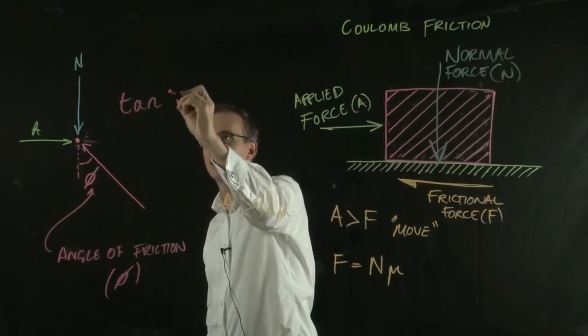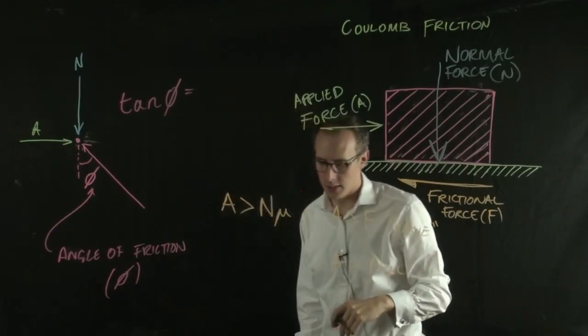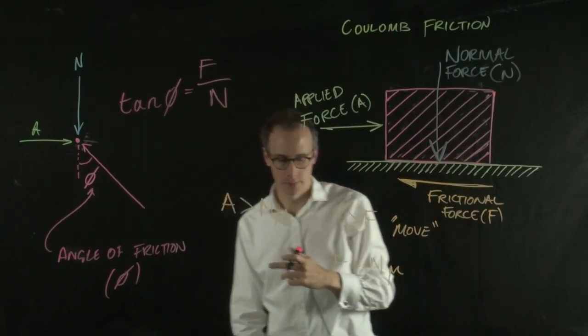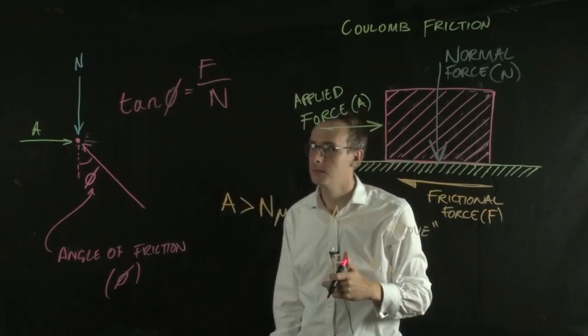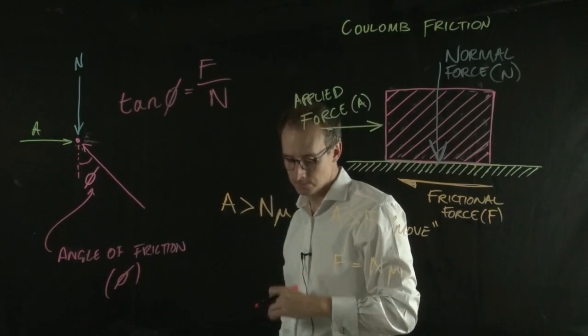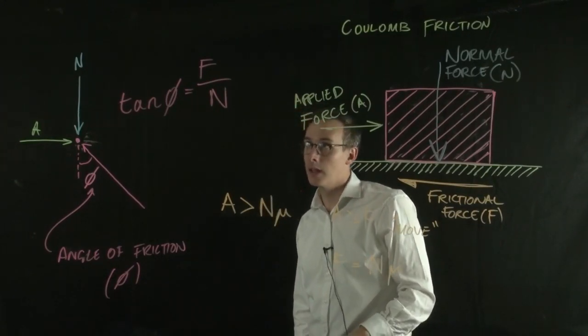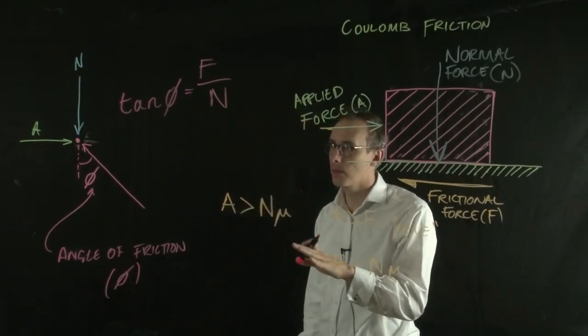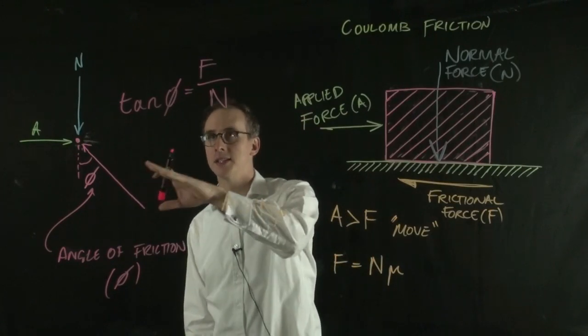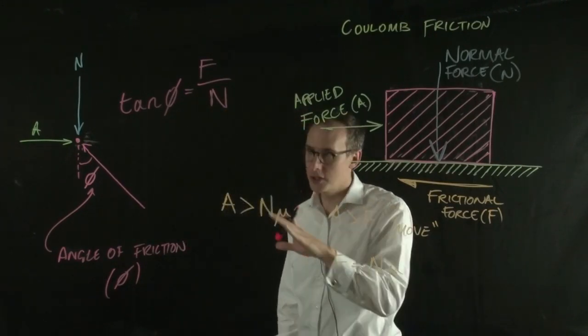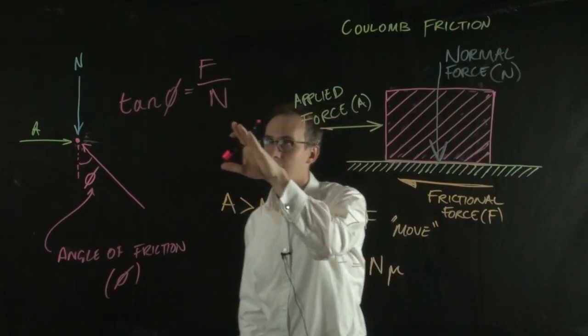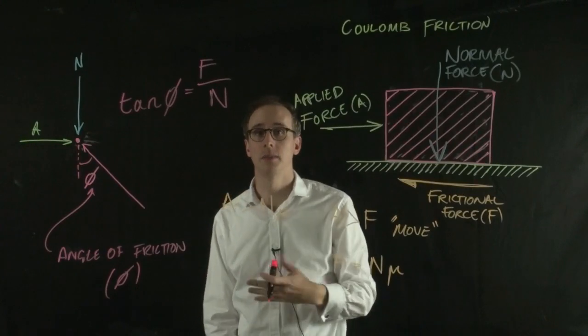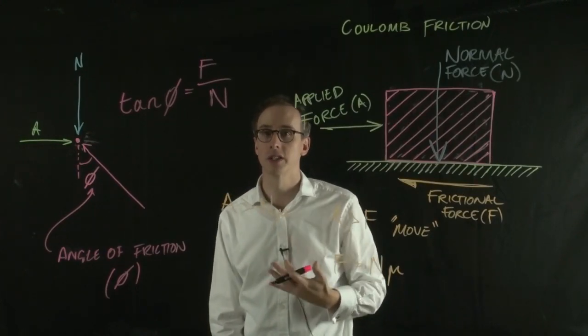Tan φ must equal the frictional force over the normal force. We can see that the larger the angle of friction, the larger the frictional force generated proportional to the normal force. A larger angle of friction means we've got a rougher or more frictional surface.